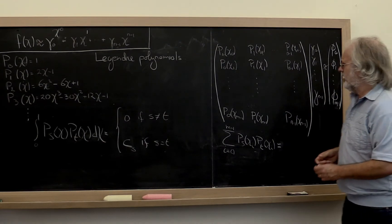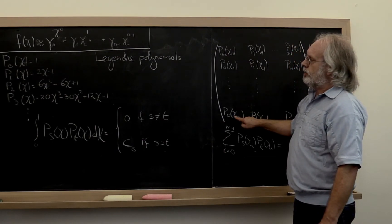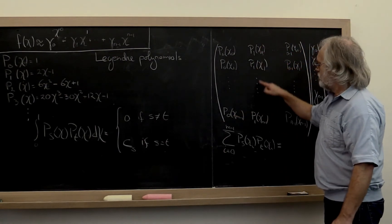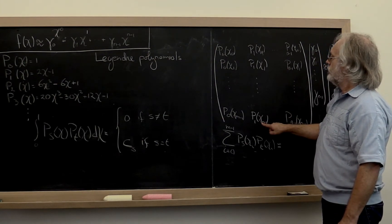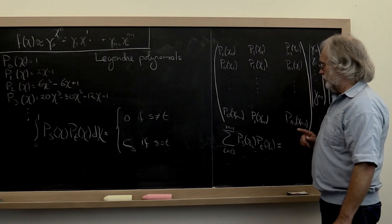Now what's going on here? This here really is a sampling of the polynomial of degree 0. This is a sampling of the polynomial of degree 1 at points chi 0, chi 1, and so forth.